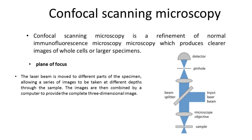Confocal Scanning Microscopy is a refinement of normal immunofluorescence microscopy which produces clearer images of whole cells or larger specimens. In normal immunofluorescence microscopy, the fluorescent light emitted by the compound comes from molecules above and below the plane of focus, blurring the image and making it difficult to determine the actual three-dimensional molecular arrangement.